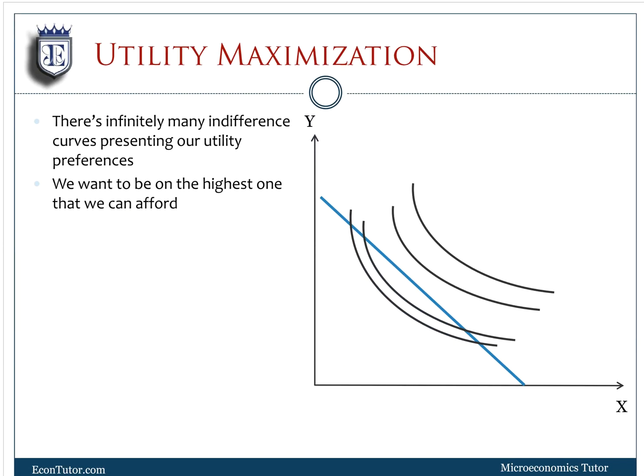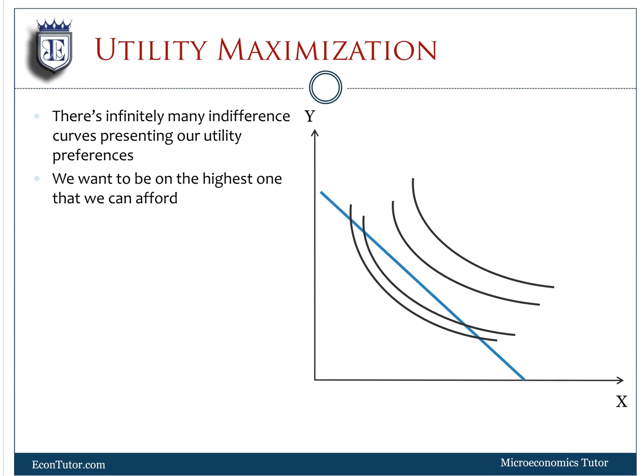Let's look at it more conceptually. We know there's infinitely many indifference curves presenting our utility preferences, and the higher indifference curve is preferred to the lower indifference curve. If we have U1, U2, U3, U4 and so on, I would love to be on the highest possible, but what if I can't afford it?